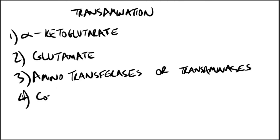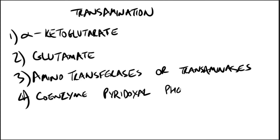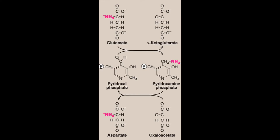All aminotransferases require the coenzyme pyridoxal phosphate, which is a derivative of vitamin B6. Aminotransferases act by transferring the amino group of an amino acid to the pyridoxal part of the coenzyme to generate pyridoxamine phosphate. The pyridoxamine form of the coenzyme then reacts with an alpha-keto acid to form an amino acid, at the same time regenerating the original aldehyde form of the coenzyme, pyridoxal phosphate.